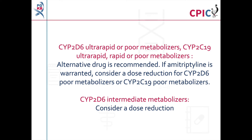The guideline recommends an alternative drug for patients who are CYP2D6 ultra-rapid or poor metabolizers, or patients who are CYP2C19 ultra-rapid, rapid, or poor metabolizers. If amitriptyline is warranted, a dose reduction can be considered for patients who are CYP2D6 poor metabolizers or CYP2C19 poor metabolizers. A dose reduction can also be considered for patients who are CYP2D6 intermediate metabolizers.